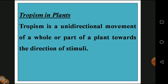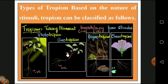Tropism is a unidirectional movement of a whole or part of the plant towards the direction of a stimulus. It is a one-way process — leaves and stem move only towards sunlight, and root moves towards soil searching for nutrients and water. The stem cannot move towards the earth and the root cannot move towards sunlight. This unidirectional movement of part or the whole plant is called tropism, induced by a stimulus.